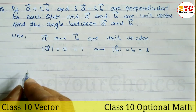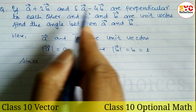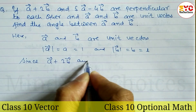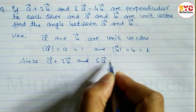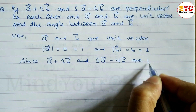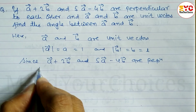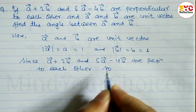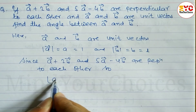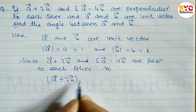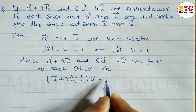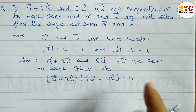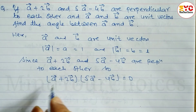Since (a + 2b) and (5a - 4b) are perpendicular to each other, the scalar product of these two vectors is equal to zero. If any two vectors are perpendicular, their scalar product is always equal to zero.